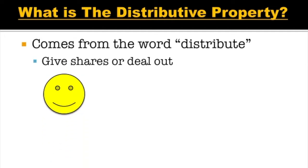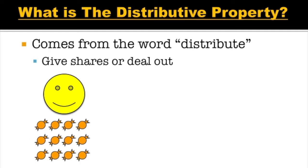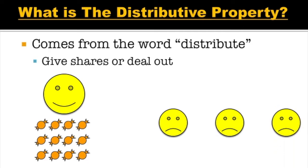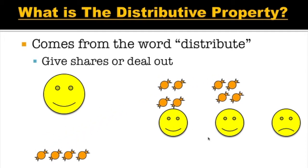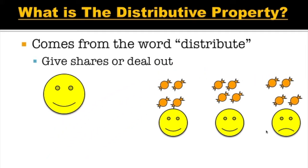Let's say this is you, and you're happy — because you have all this candy, all to yourself. But you've got three friends who are not so happy. So you decide to distribute your candy amongst your friends evenly. You've got three friends and 12 pieces of candy, so each friend is going to get four pieces of candy. Your first friend will get four — that makes your friend happy. Your second friend will get four — that makes that friend happy. And your third friend will also get four candies, which makes that friend happy as well.